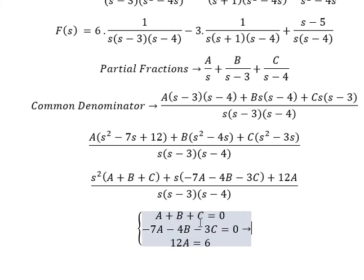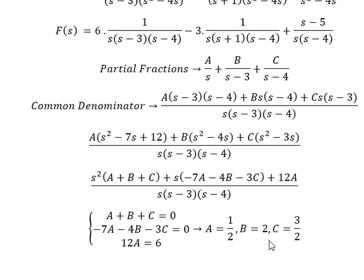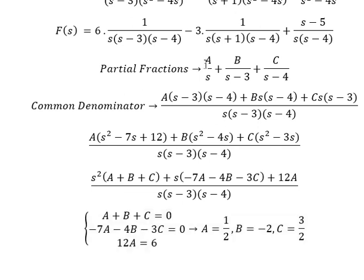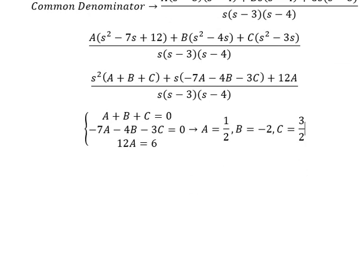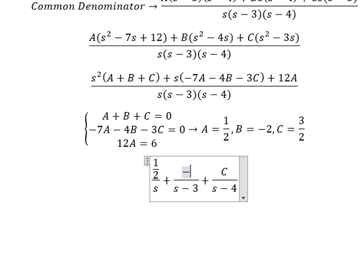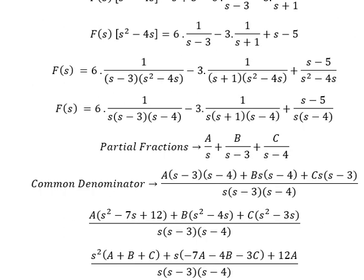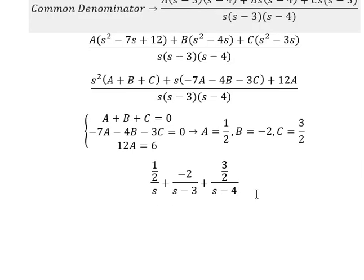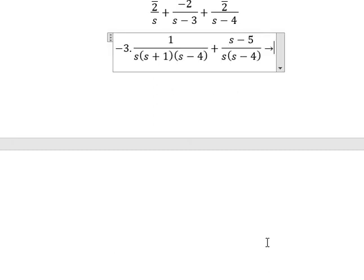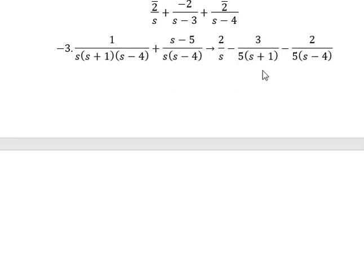Now we need to find the solutions for A, B, and C. This gives negative three. After we find A, B, and C, we substitute them back. So A equals one over two, B equals negative two, C equals three over two. Now the partial fractions should be about like this.